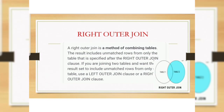Right outer join. A right outer join is a method of combining tables. The result includes unmatched rows from only the table specified after the right outer join. If you are joining two tables and the result set includes unmatched rows from only one table, use a left outer join or a right outer join.